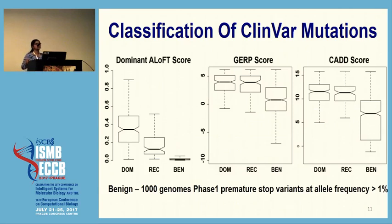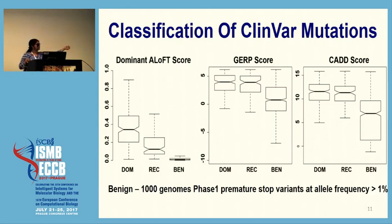I'll show some examples where this method really works. Looking at a set of mutations from ClinVar not included in the training set that are pathogenic, in panel one I show that ALOFT discriminates between dominant and recessive disease-causing genes pretty well, and it also clearly shows that the benign variant has a very low disease-causing score. Comparing it with GERP, a measure of evolutionary conservation, and CAD score — those two methods are not able to differentiate between variants that cause disease in a dominantly acting fashion versus those that cause disease in a recessive fashion.